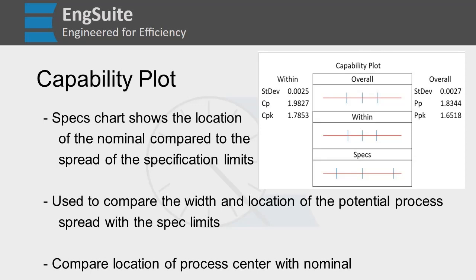These are most useful when you compare each against the specs chart. Drawing these lines straight down through the specs gives you an idea of where your process center is located compared to your spec limits and nominal.